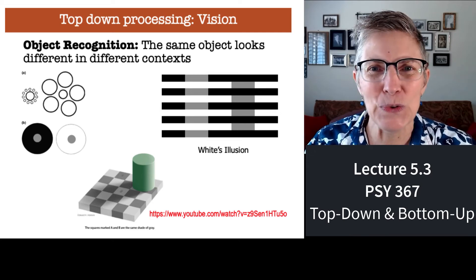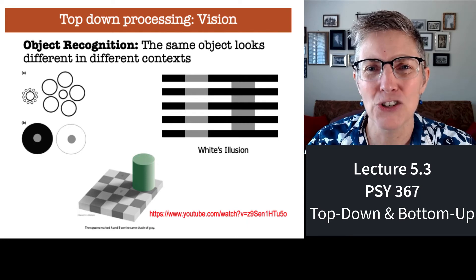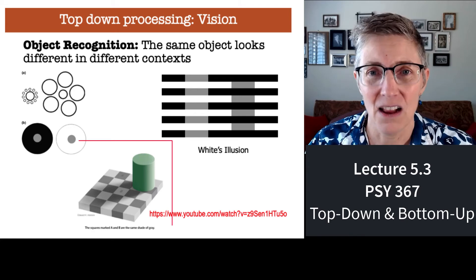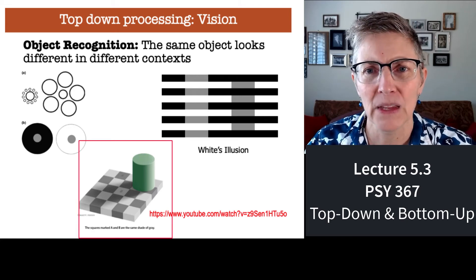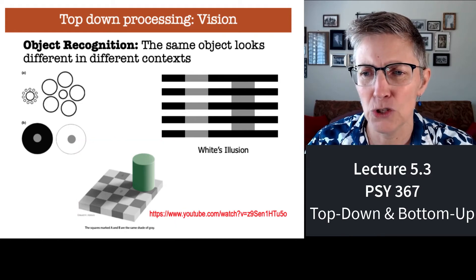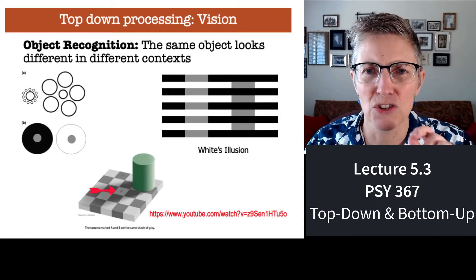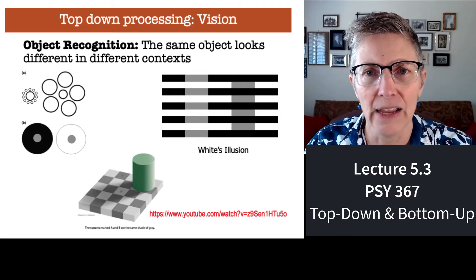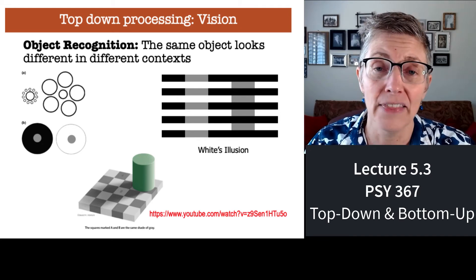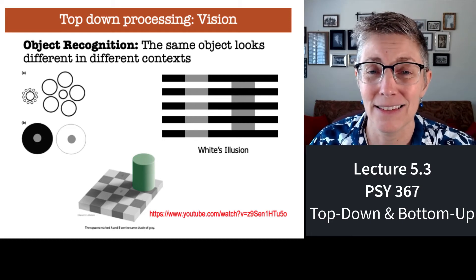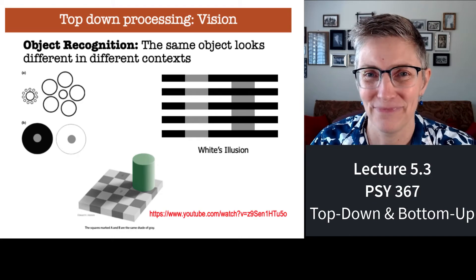Now I'm going to take a break and show you a video that is really powerful on context effects. You see a checkerboard with a cylinder casting a shadow on it. Two of the squares have a little label — one is A and one is B — and it looks like one square is dark gray and the other is light gray. I'm going to show you in a second that this is not true.